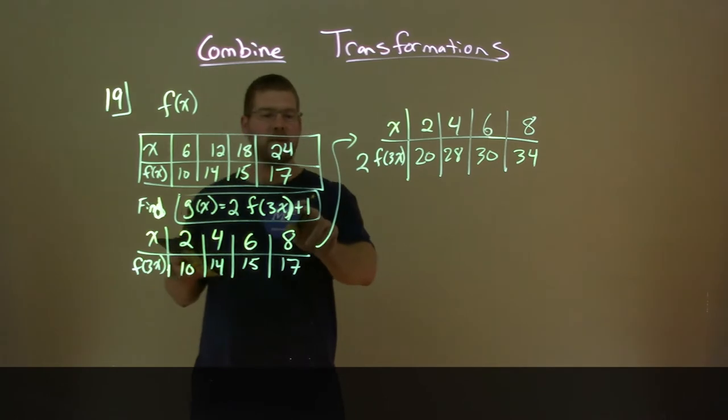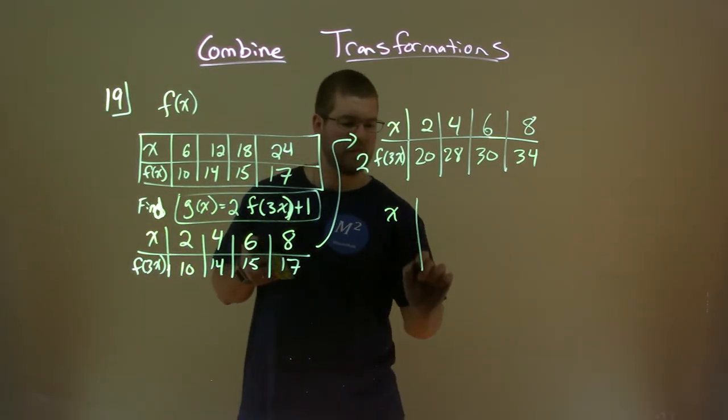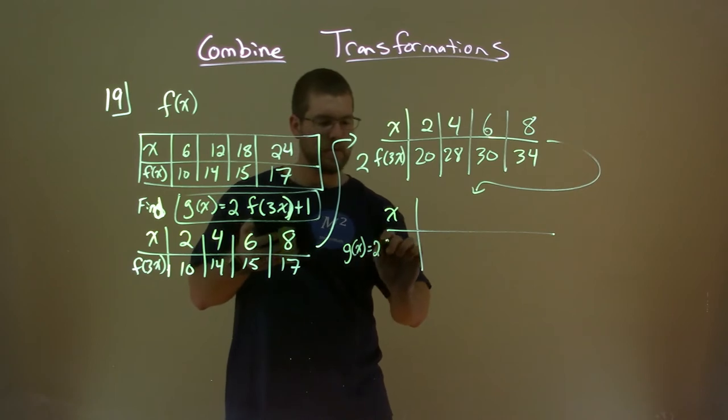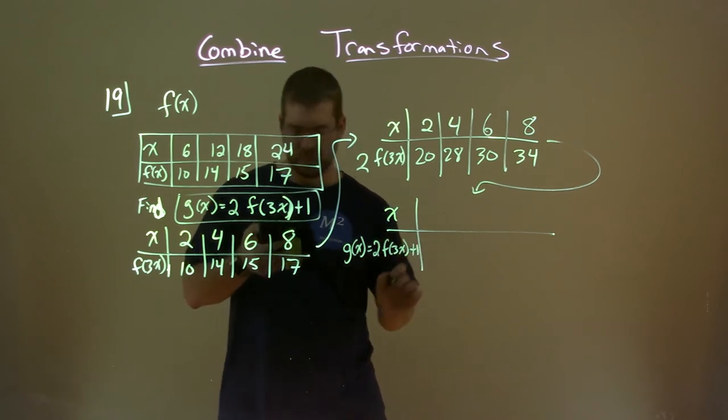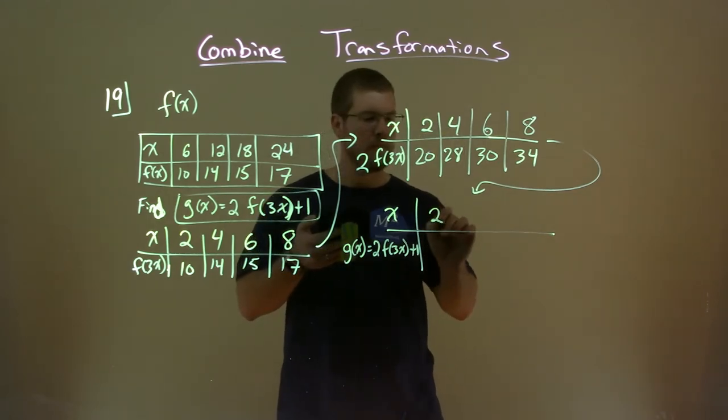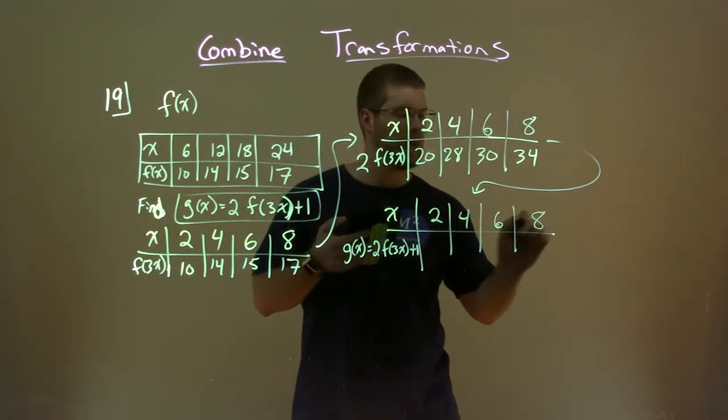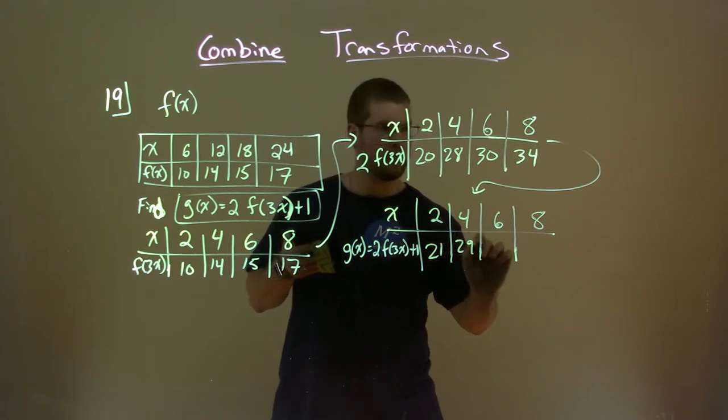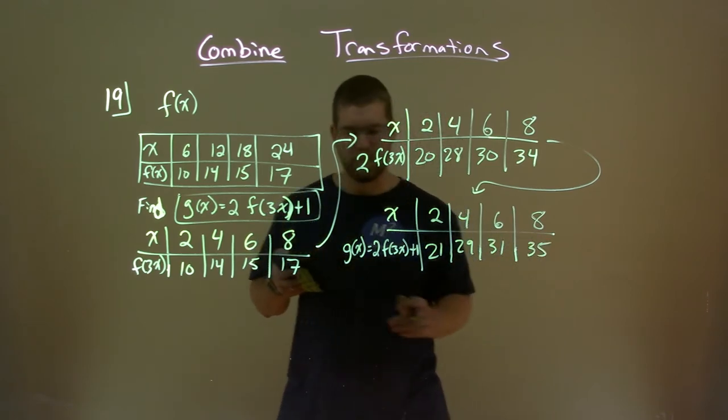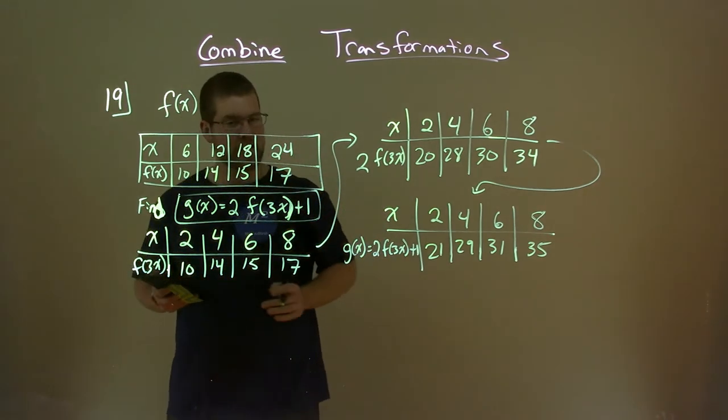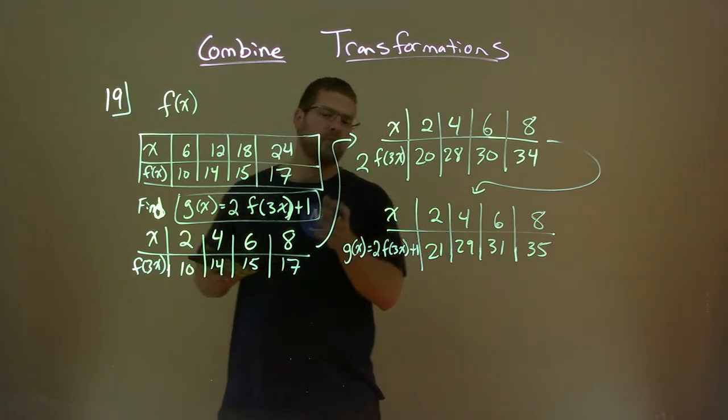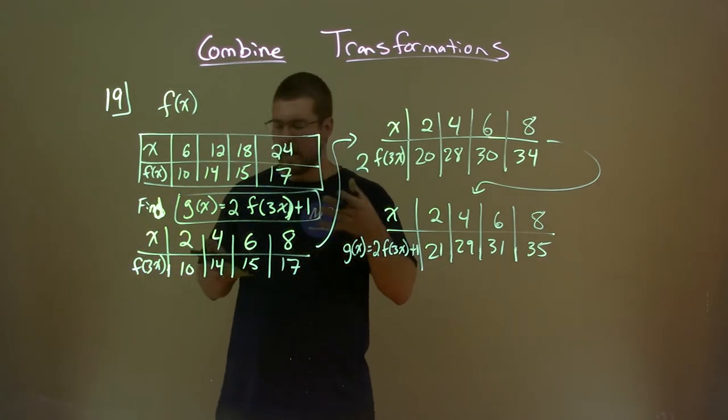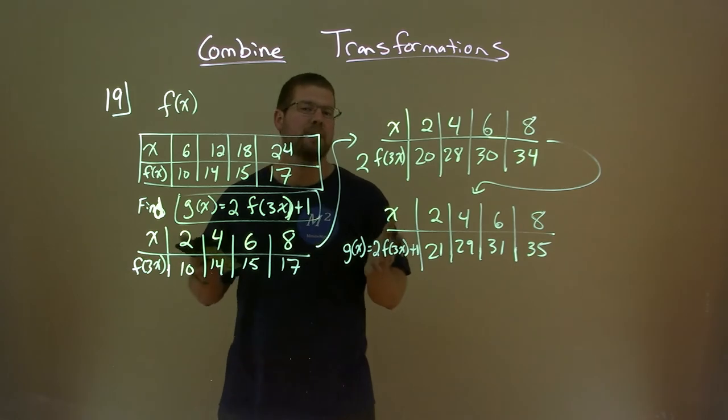And lastly, we just have to add a 1 to complete g(x). So we have x here, and then g(x), which is 2f(3x) plus 1. In this case, we're keeping the same input values from the previous part: 2, 4, 6, 8. And then we add 1 to the output: 21, 29, 31, and 35. And now we have a table here for g(x), given our original table f(x). If some of these steps were a little confusing, like why I multiplied by one-third on the input, look at our previous video. We kind of talked about that stuff. Here we're just showing examples of it all together.